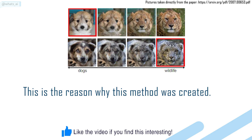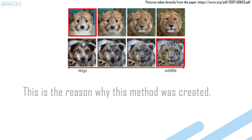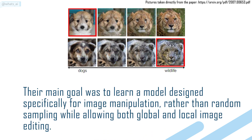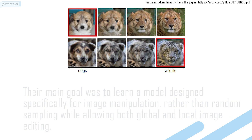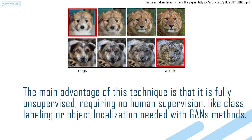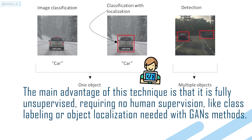This is the reason why this method was created. Their main goal was to learn a model designed specifically for image manipulation rather than random sampling, while allowing both global and local image editing. The main advantage of this technique is that it is fully unsupervised, requiring no human supervision like class labeling or object localization needed with GAN methods.